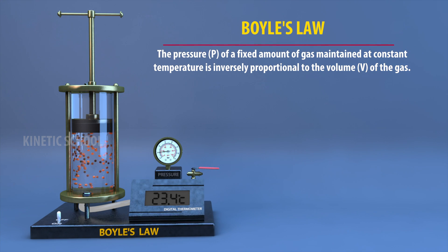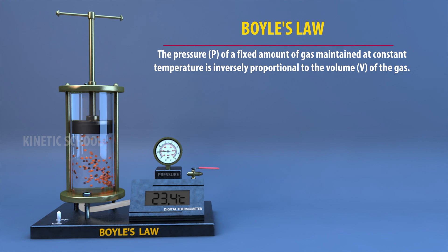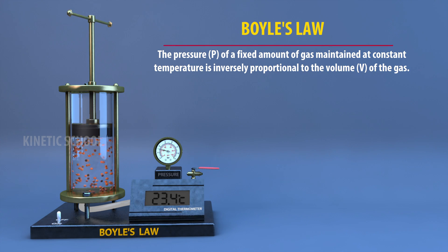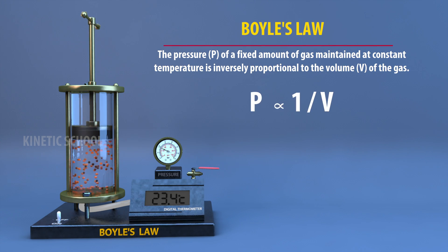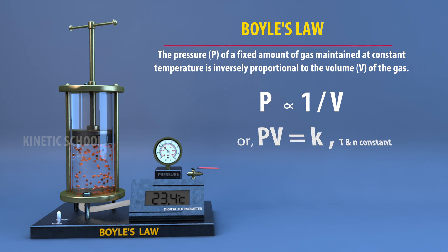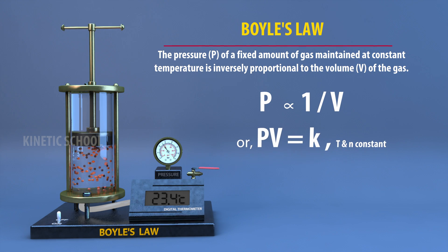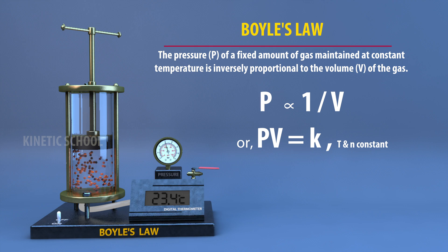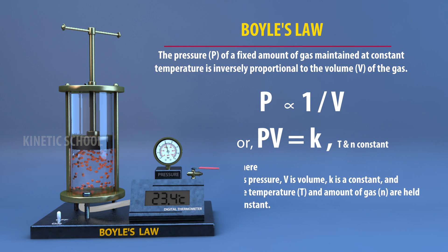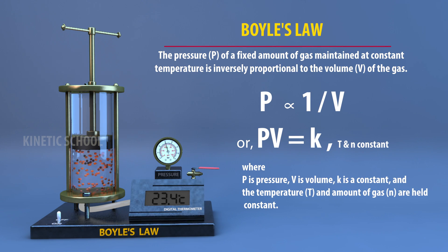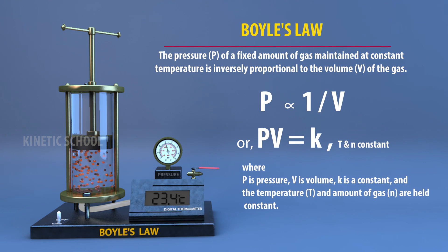Boyle's law states that the pressure of a fixed amount of gas, maintained at constant temperature, is inversely proportional to the volume of the gas. That means P is inversely proportional to V. So the product of the pressure and volume of a gas is a constant.